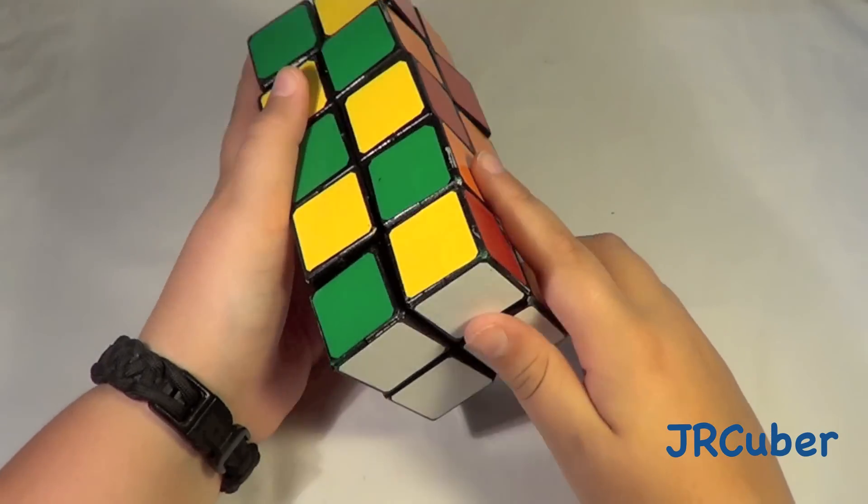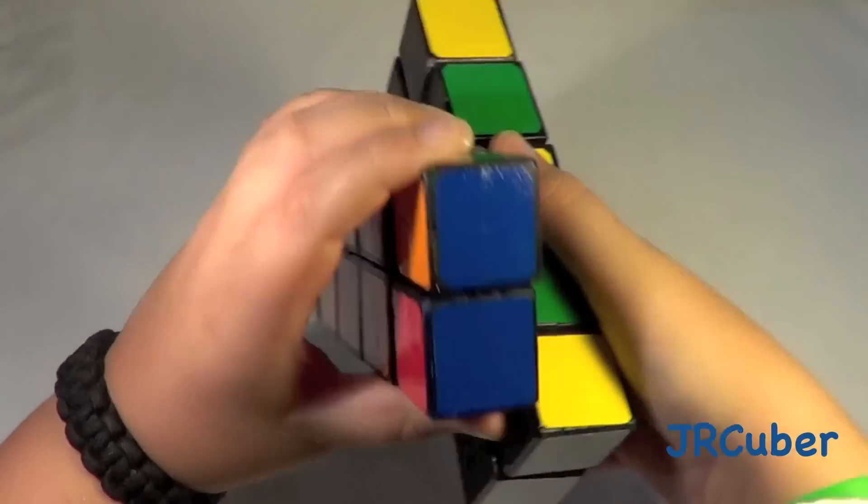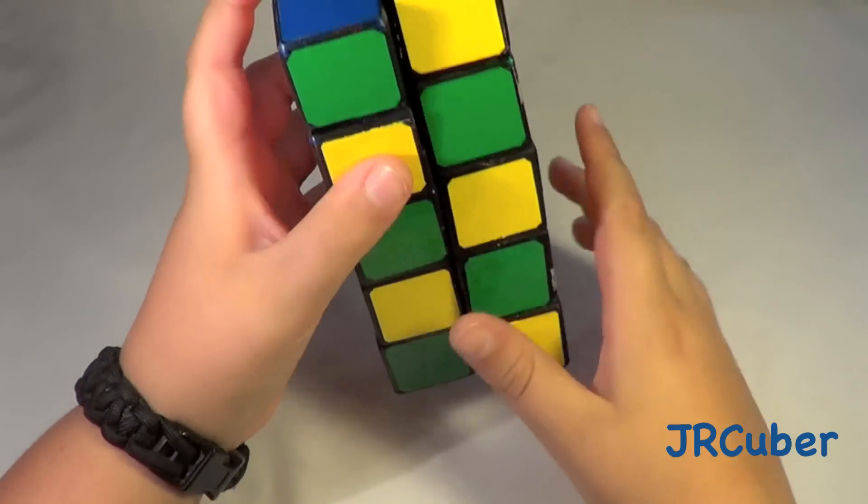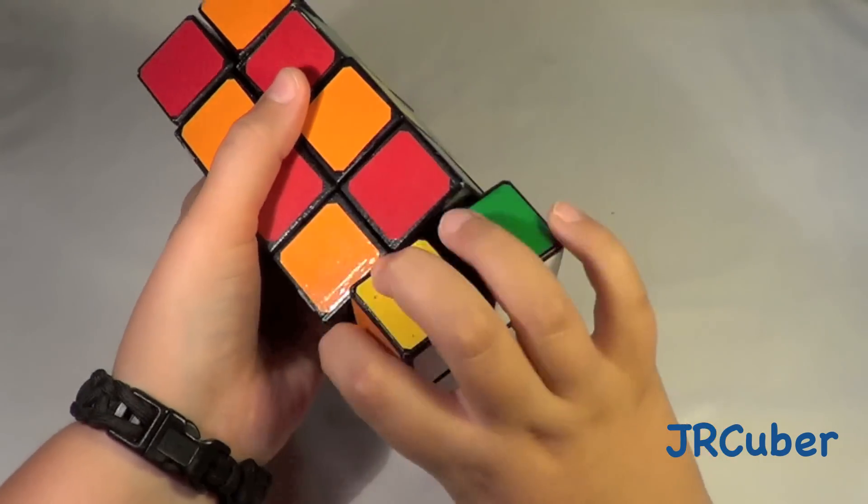but the blue and white are not similar, so when I have it scrambled, I can tell them apart very easily. So here's a checker pattern. Looks very nice.